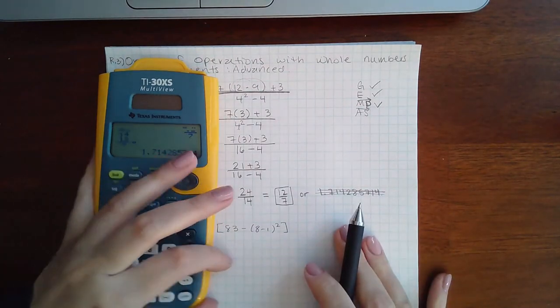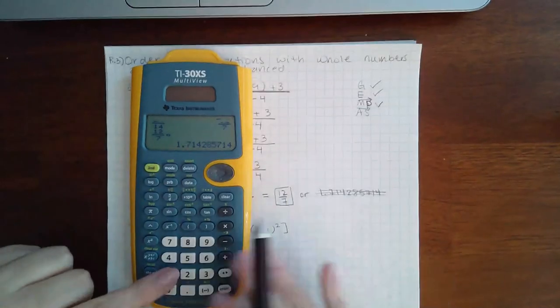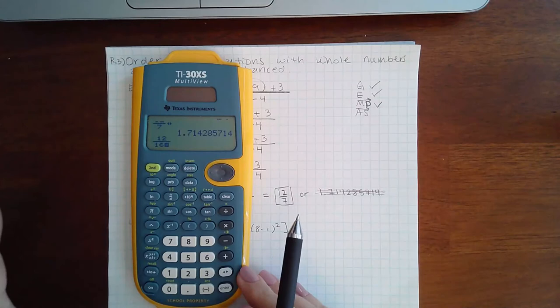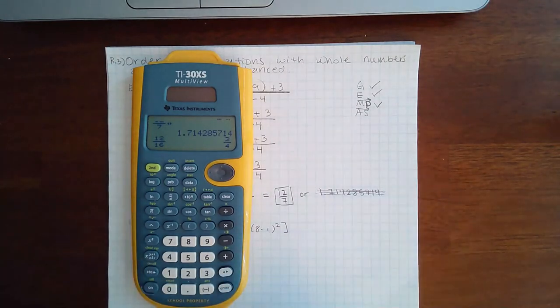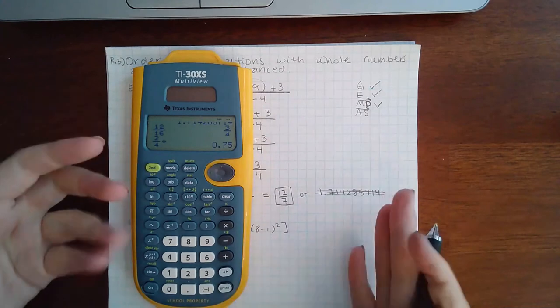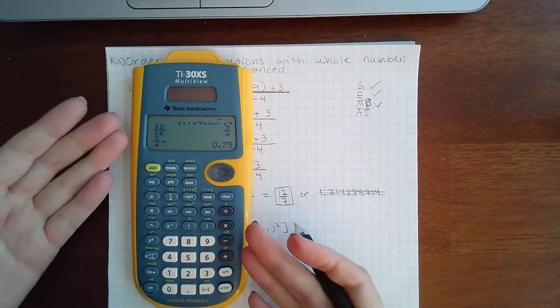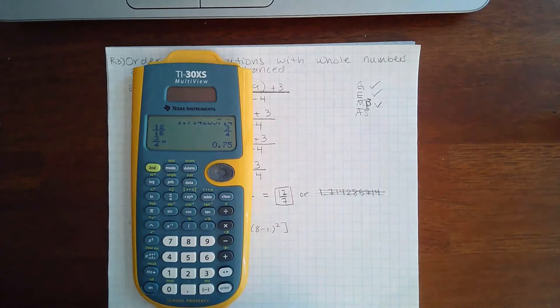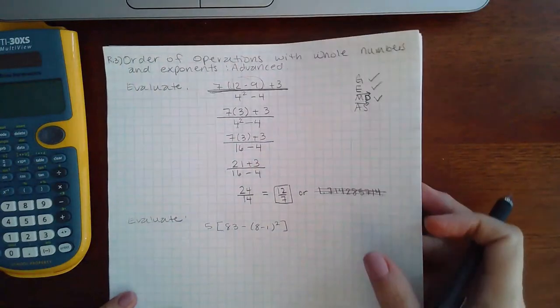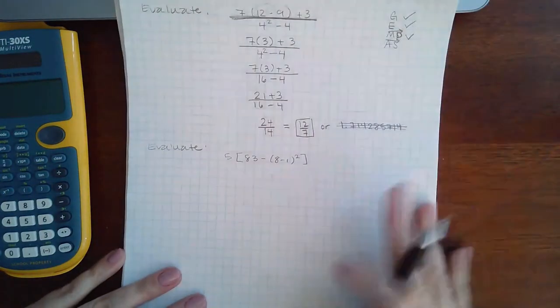Now had I had maybe 12 over 16, just as an example, that reduces to three-fourths. And if I hit the fraction button, it gives me a nice decimal that doesn't keep going and going, and so in that case you would have the choice on whether to type in three-fourths as your final answer or 0.75 as your final answer.